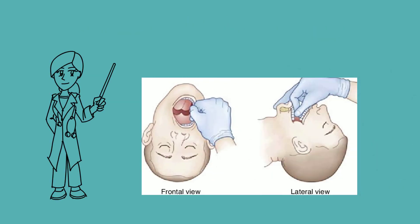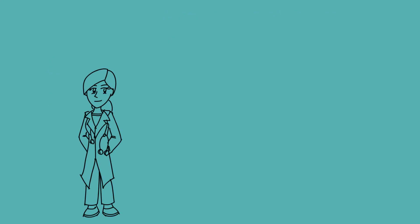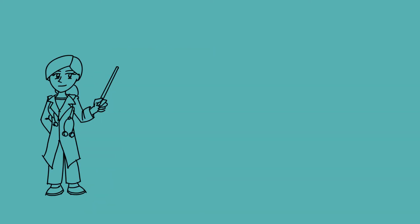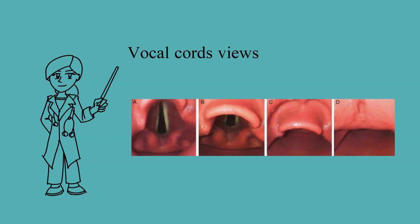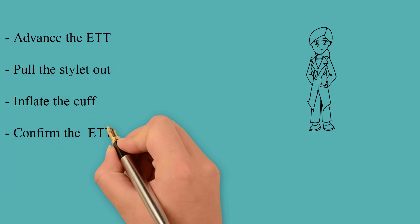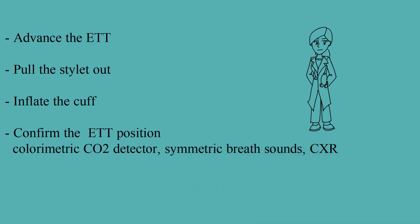Open the patient's mouth using your thumb and index finger, then enter the laryngoscope from the right angle until you see the epiglottis. Swipe the tongue toward the middle and move your blade toward the airway to see the vocal cords. The goal is to see Grade A view. Advance the endotracheal tube, pull the stylet out, and inflate the cuff. Then confirm tube position using a colorimetric CO2 detector, symmetric breath sounds, and chest x-ray.